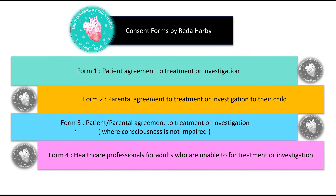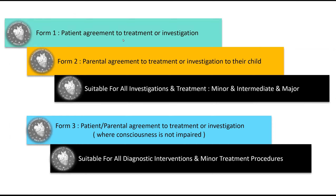There are four types of consent forms inside the UK. Consent form one is a patient agreement to treatment or investigation — the normal form used in the UK. Consent form two is for parents consenting for their child, and is suitable for all treatments whether minor, intermediate, or major investigations.